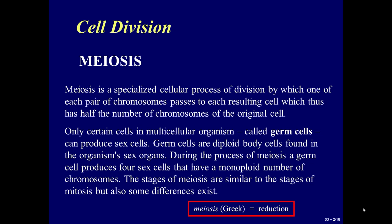During the process of meiosis, a germ cell produces four sex cells that have a monoploid number of chromosomes. The stages of meiosis are similar to the stages of mitosis, but some differences exist.